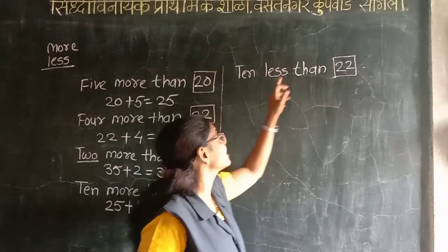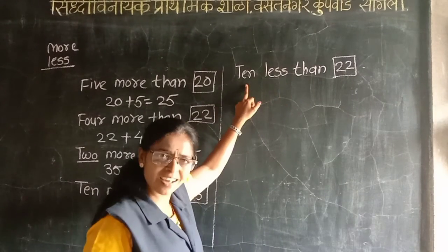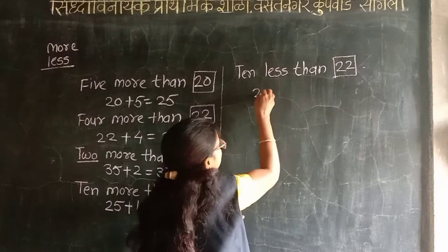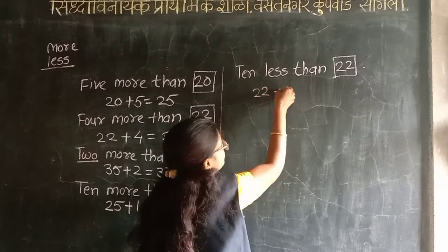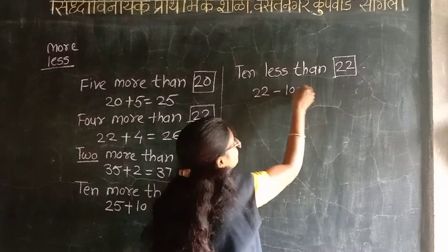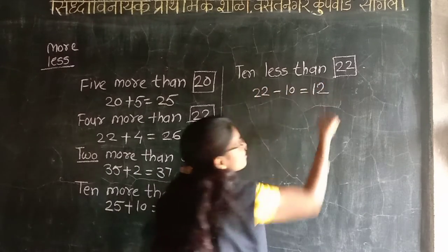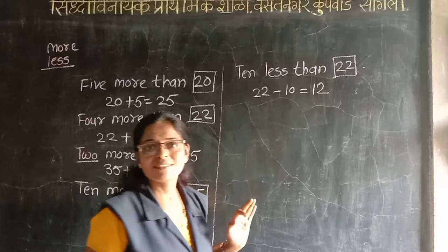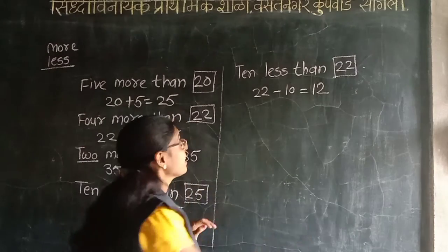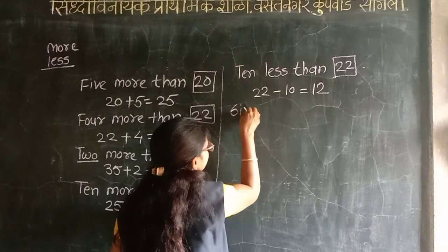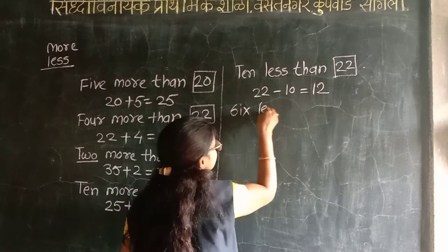Less than means kami — pekshah kami. Kiti ni kami? Daha ne kami. Means 22 minus 10. Kiti ya le? 12. OK. Now 6 less than...